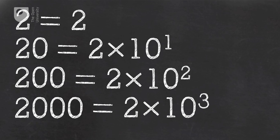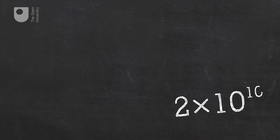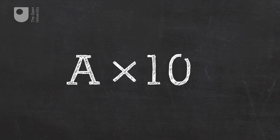Think of that as: 2, two times ten one time, two times ten two times, and two times ten three times. Scientists write that with a superscript and describe it as 'to the power of.' This last number is therefore two times ten to the power of three. This is scientific notation — you can write any number like this. The basic form is a number (let's call it a) multiplied by ten to the power of another number (let's call it b), where b tells you how many times ten should be multiplied by itself.